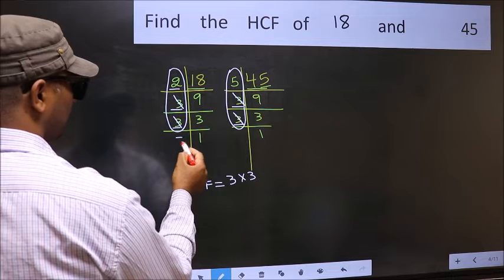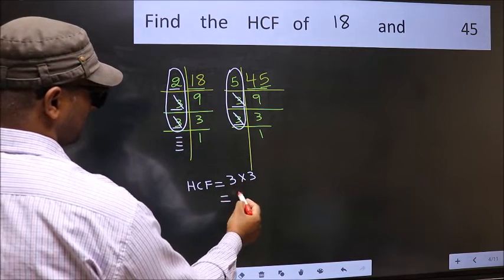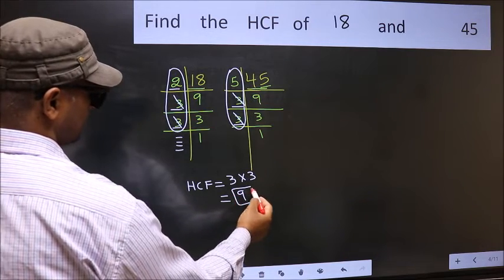No more numbers have been left out. So our HCF is 3 into 3. 9 is our HCF.